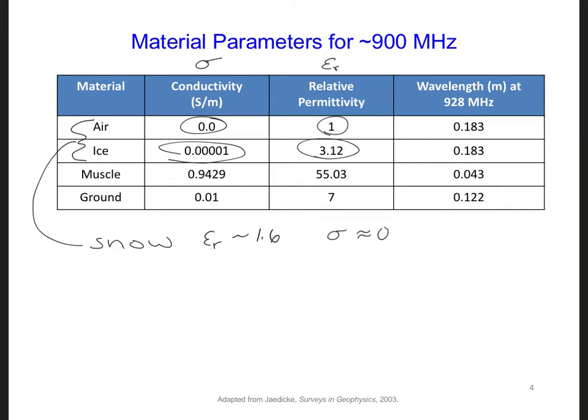Sometimes, assuming the body is homogeneous is a good enough approximation, and sometimes it's not. In our case, since we only want to detect the presence of a person, rather than any internal features of the body, and since the conductivity and permittivity of a human body is so different from the surrounding air, snow, and ground, it turns out to be a decent approximation to assume the body is homogeneous.